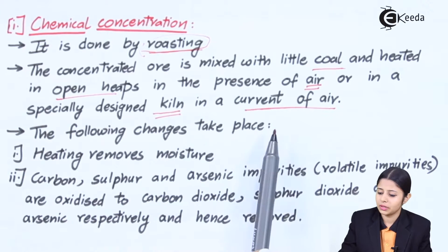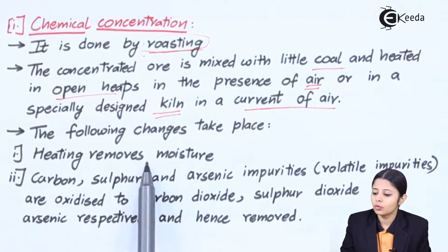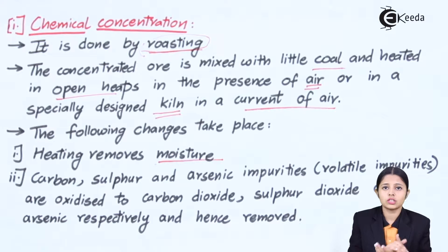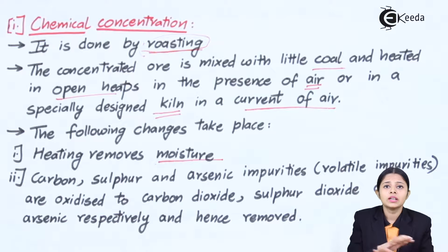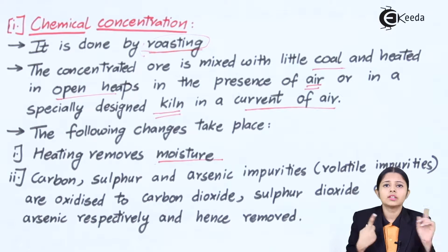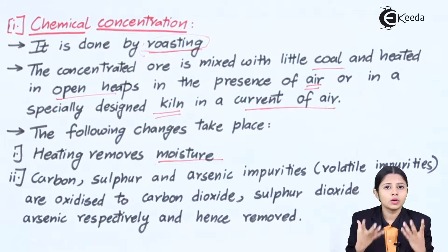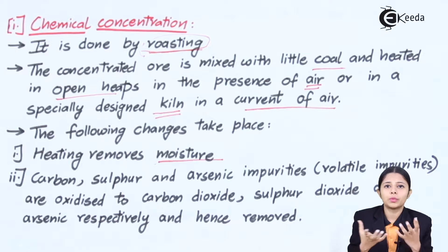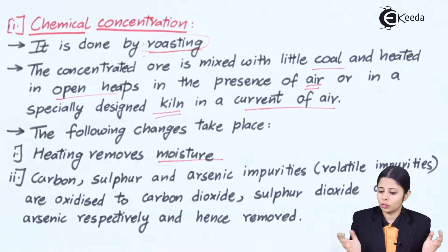The following changes take place during roasting. The first thing is it removes moisture. When the ore is finely divided and heated in the presence of oxygen or air, the first thing that will leave the ore is moisture. This is because water (H₂O) has a boiling temperature of 100 degrees Celsius, so whatever moisture is present will evaporate into the atmosphere.